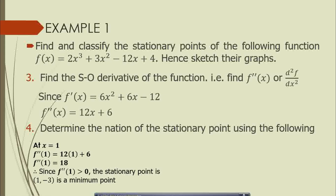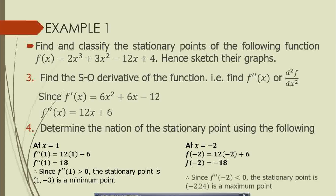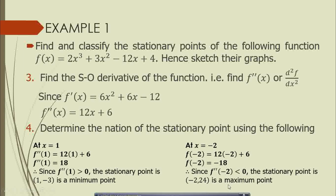Now for the stationary point at x = -2, we substitute into the second order derivative: 12(-2) + 6 = -18. Since f''(-2) = -18, which is negative, the stationary point (-2, 24) is a local maximum point. So we have classified both stationary points: (1, -3) is a local minimum and (-2, 24) is a local maximum.